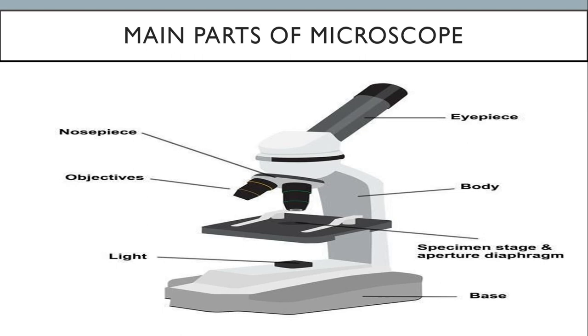Now microscope, basically the main here you can see base. On the base a c-shape body is attached and to this c-shape body eyepiece is attached. Through this eyepiece we can see how the object, how the composition is. The c-shape body, this eyepiece and base and light.